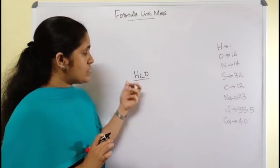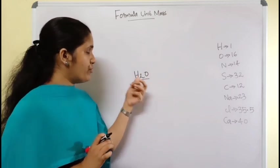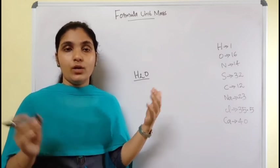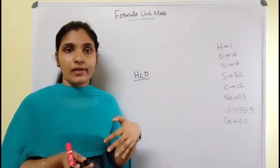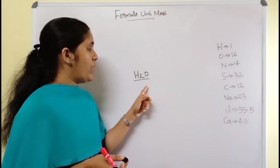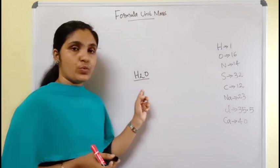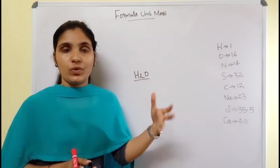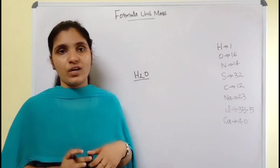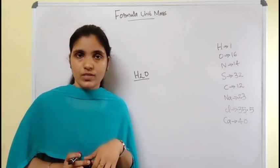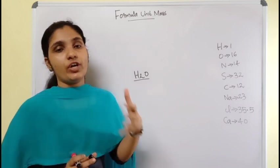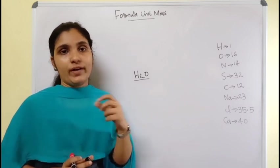The formula unit mass of water means the sum total of two hydrogen atoms and one oxygen atom's atomic mass. By adding the atomic masses of one oxygen and two hydrogens, the value we get is called its formula unit mass or molecular mass.